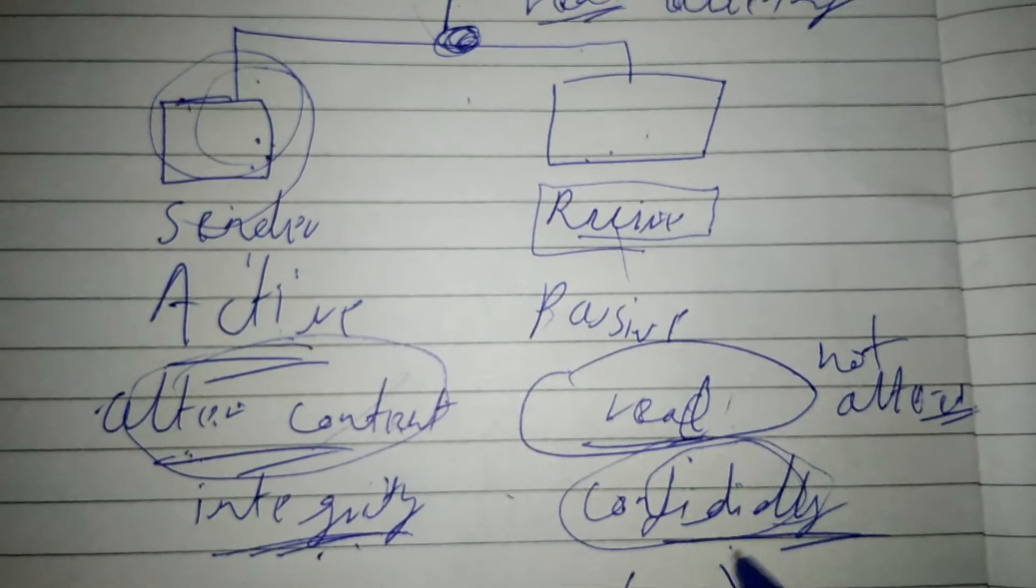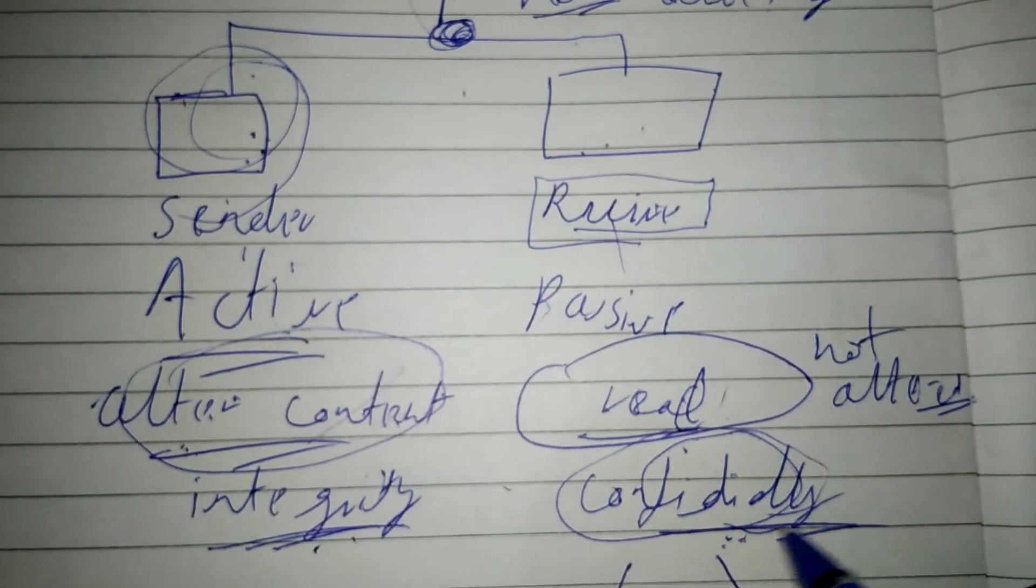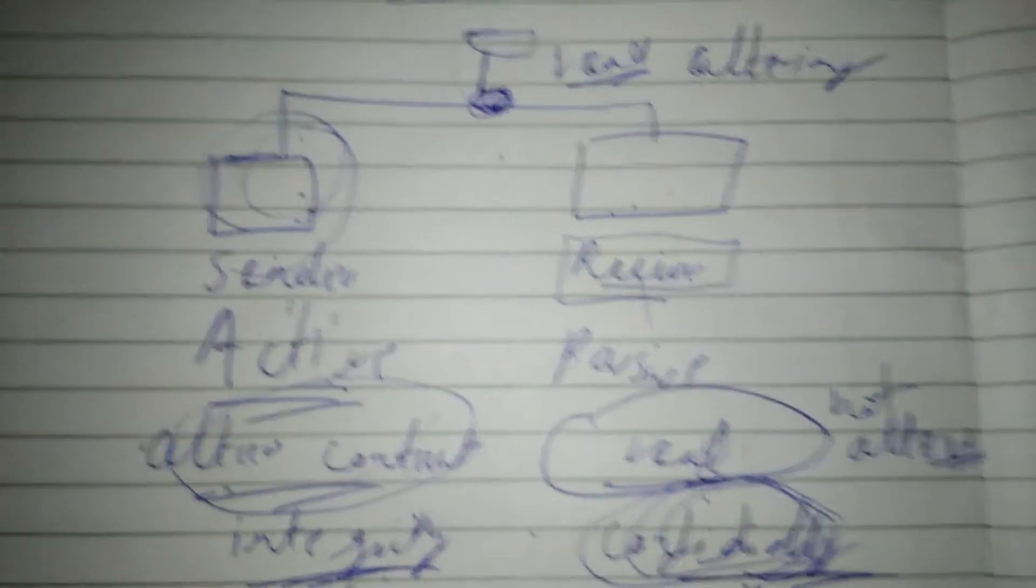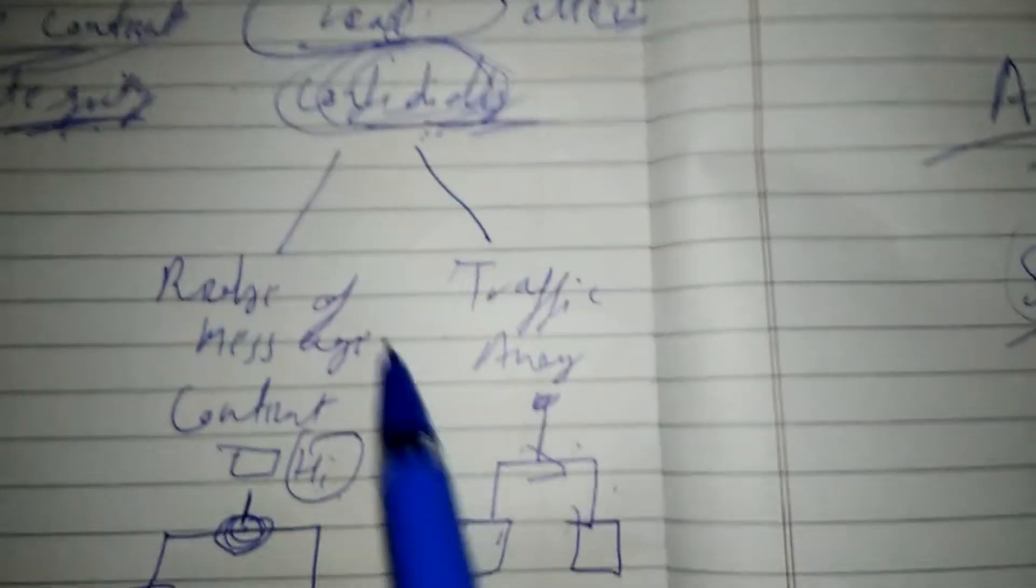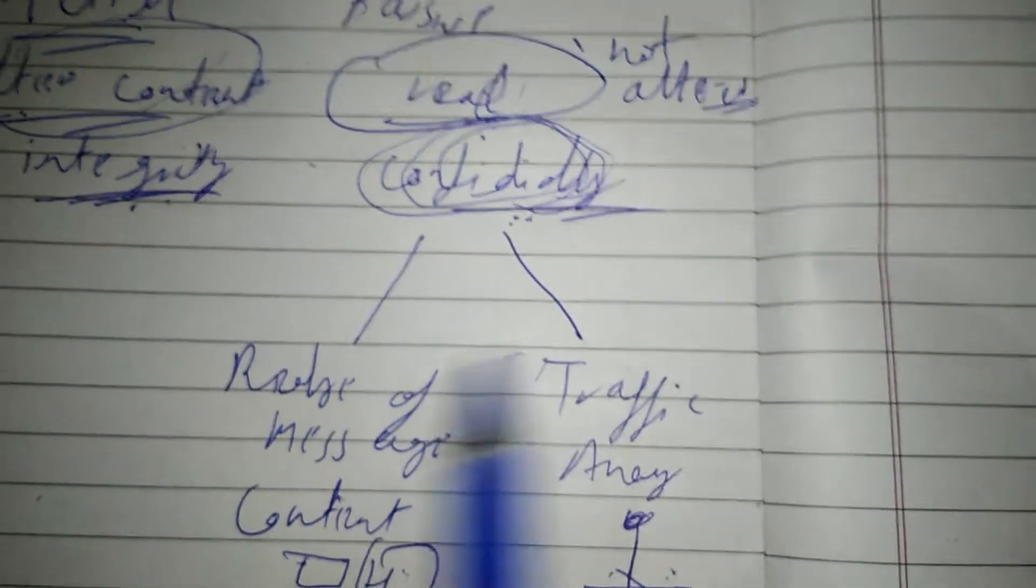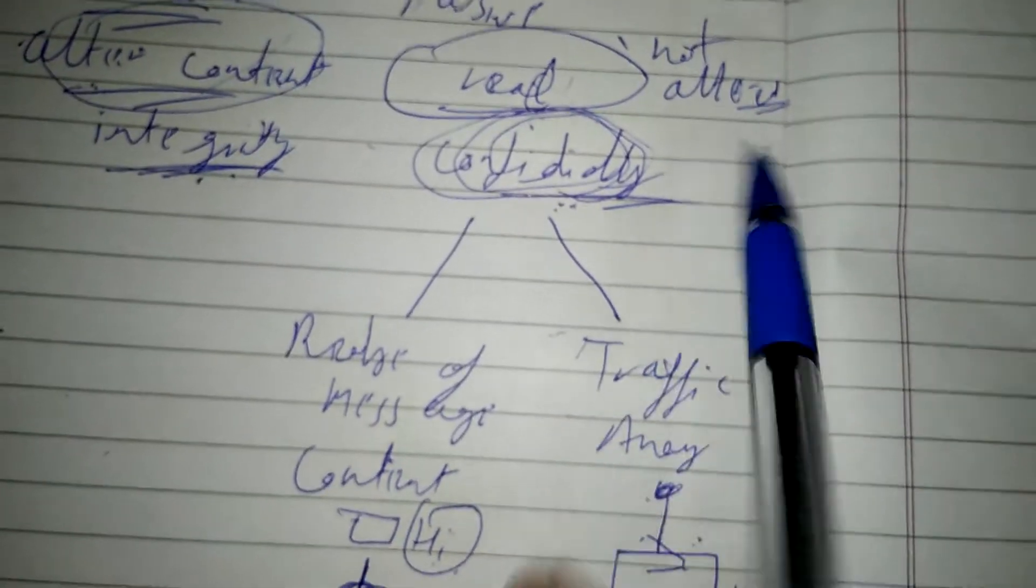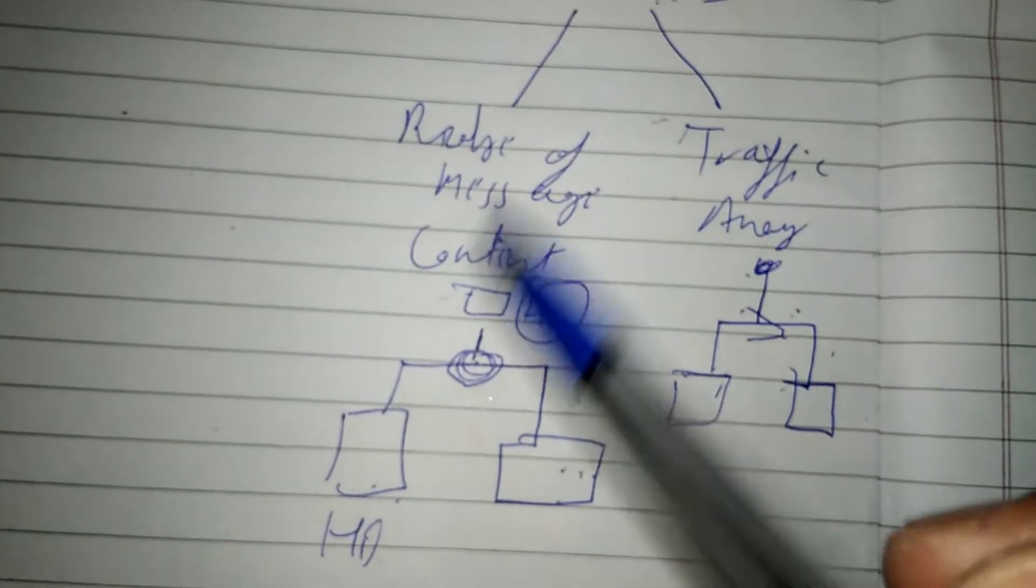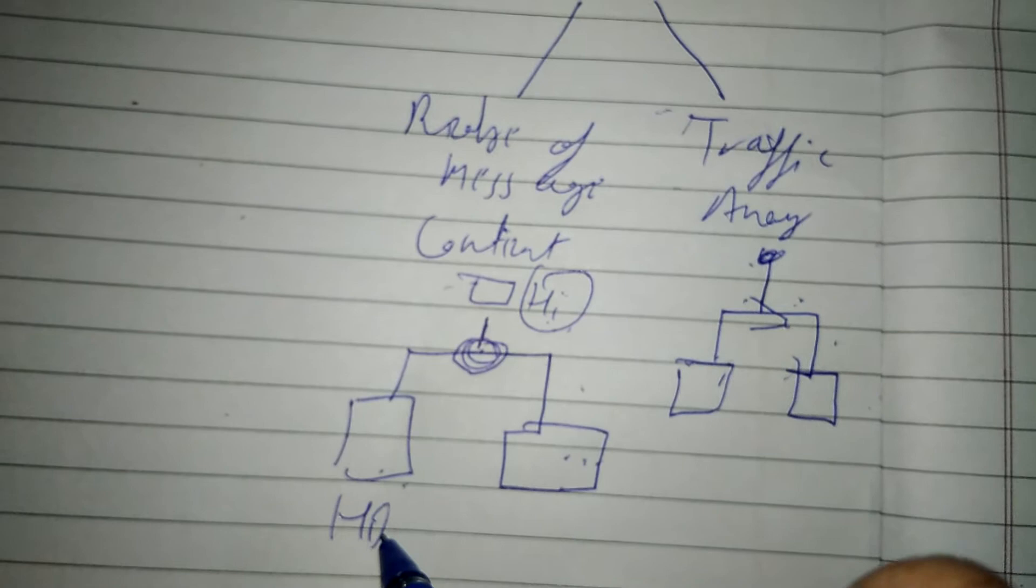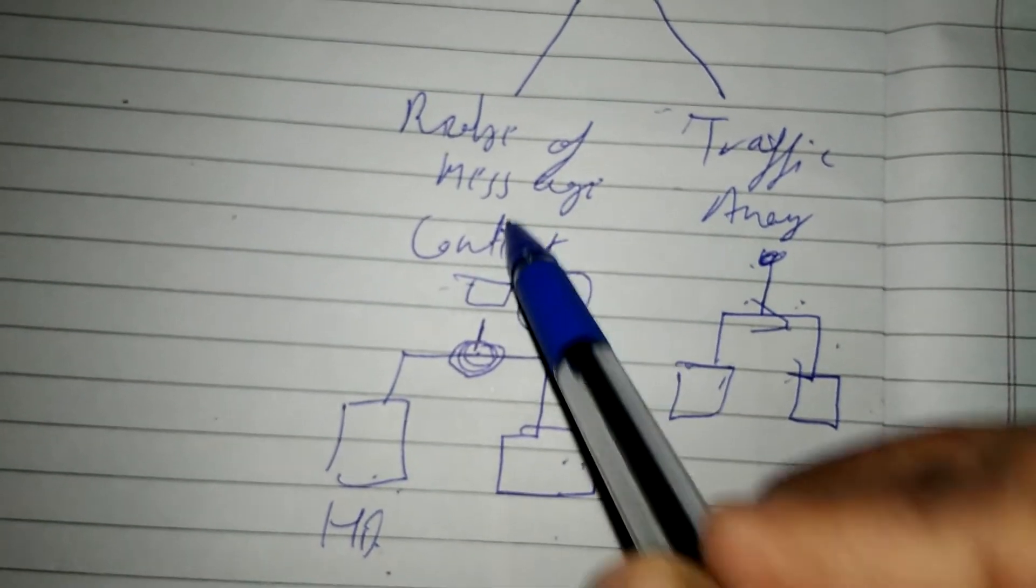Let us first talk about passive attacks. There are two kinds: release of message content and traffic analysis. Release of message content is when a transmission occurs between sender and receiver, like the sender sends a message 'Hi' to the receiver, and a third person reads it.